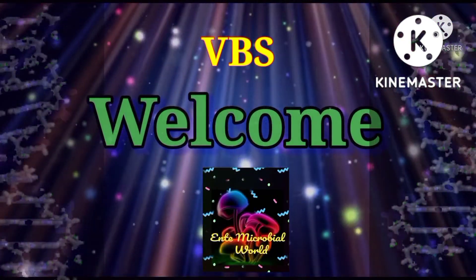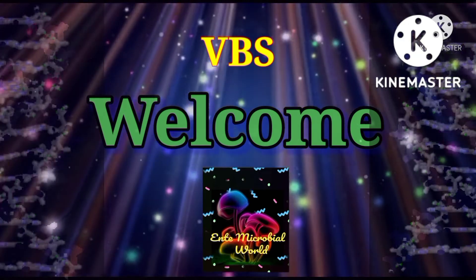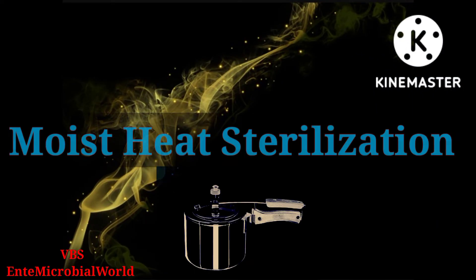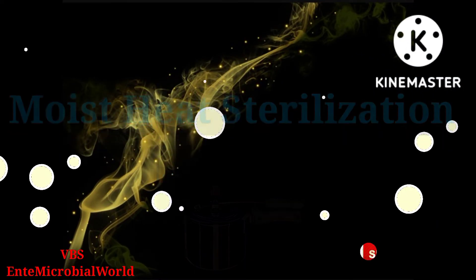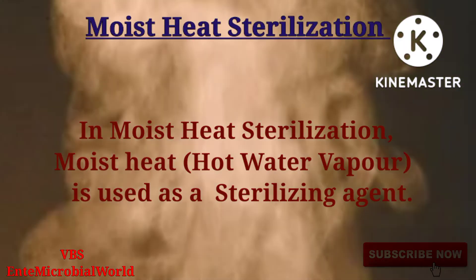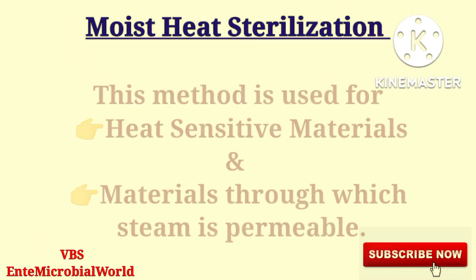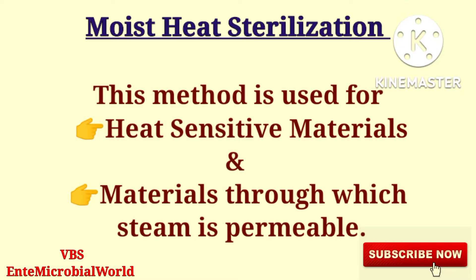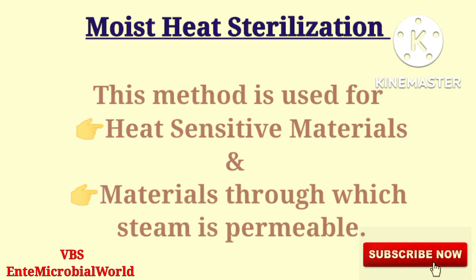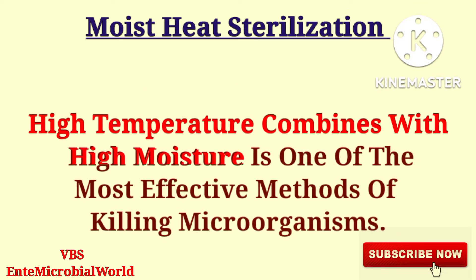Welcome to this video on moist heat sterilization. In moist heat sterilization, hot water vapor is used as the sterilizing agent. This method is used for heat-sensitive materials and materials through which steam is permeable. High temperature combined with moisture makes it one of the most effective methods of killing microorganisms.